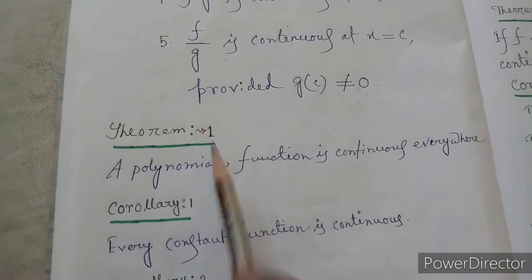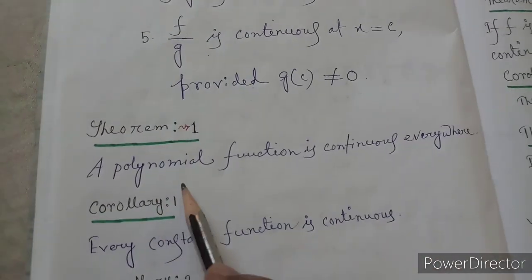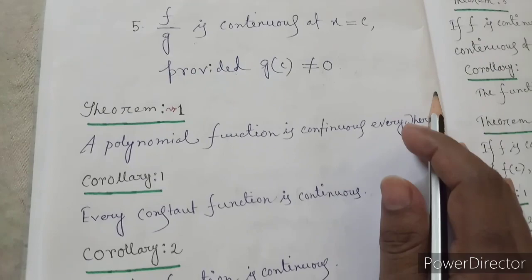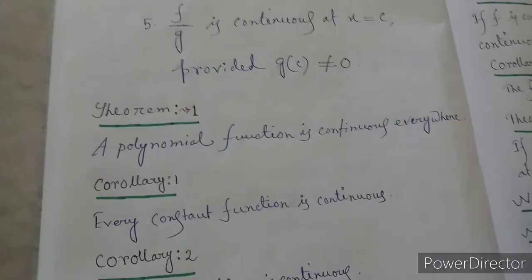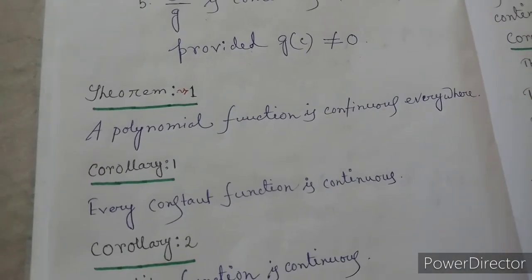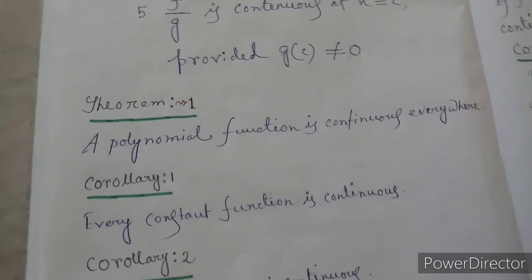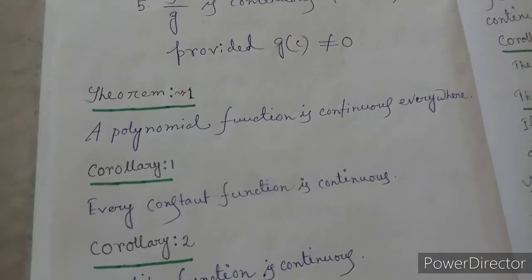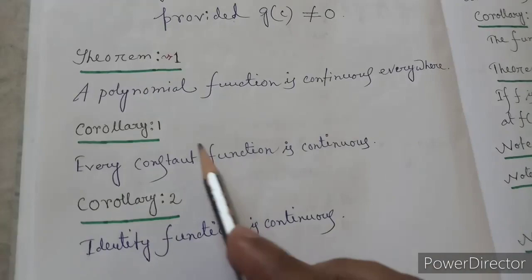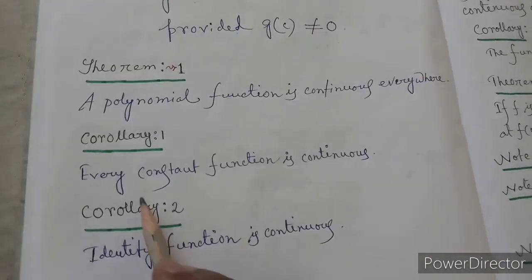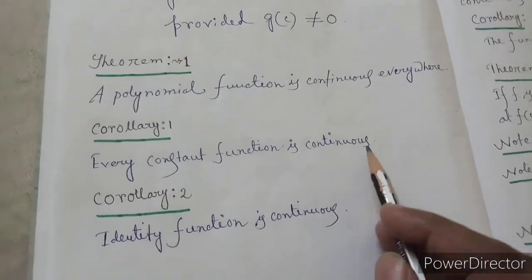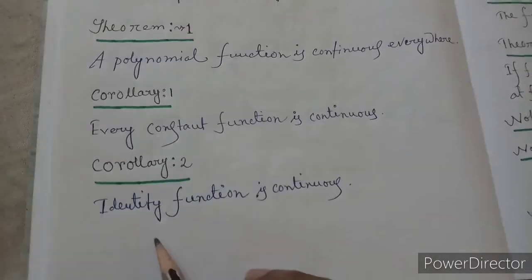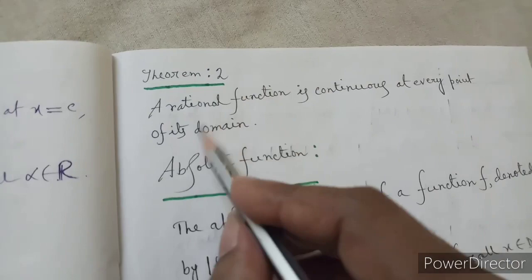Theorem one — very important: a polynomial function is continuous everywhere. Polynomial functions like f(x) equals x squared plus 2x plus 3 — quadratic, linear, and cubic equations — are all polynomial equations and hence continuous everywhere. Corollary one: every constant function is continuous, since a constant function is a zero-degree polynomial. The identity function is also a continuous function.